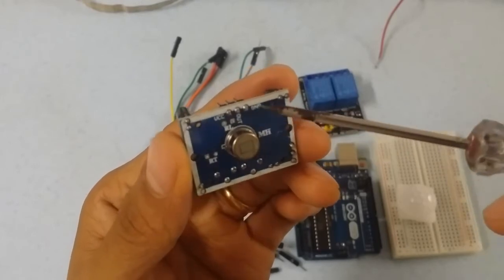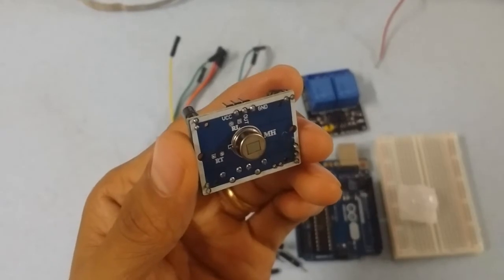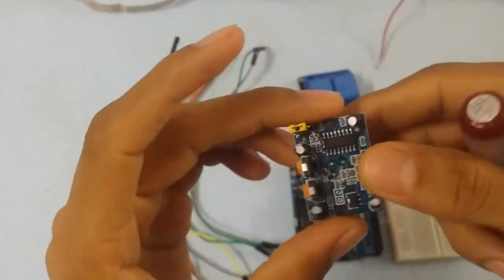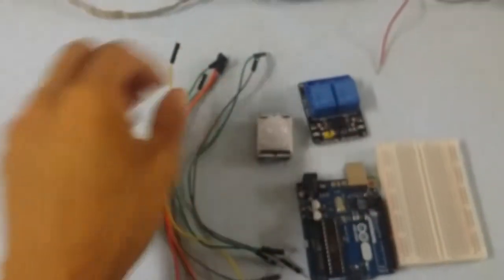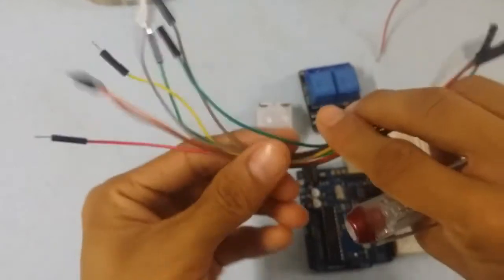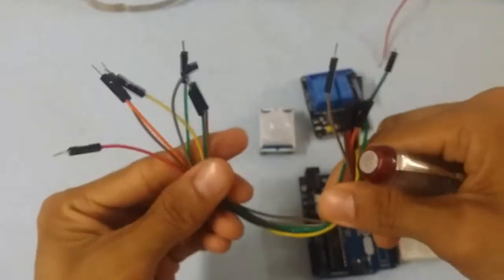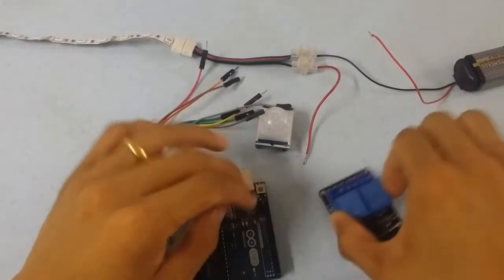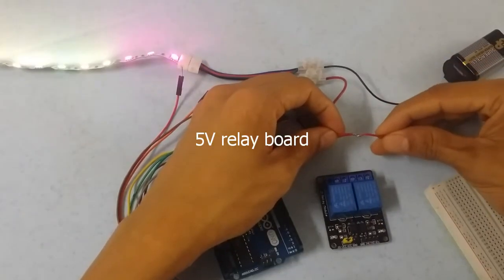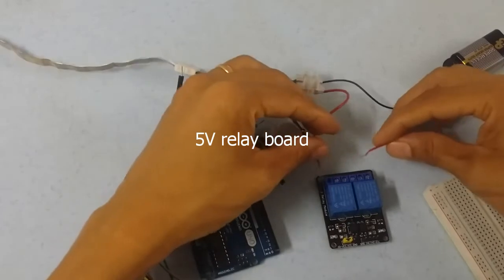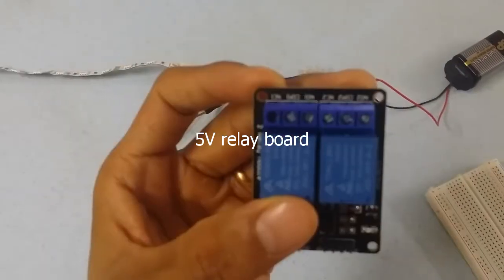The signal pin goes to pin 10. I'm connecting at the top here with a jumper wire. This jumper wire will be labeled. I'm using one channel relay, which is a 5V relay.